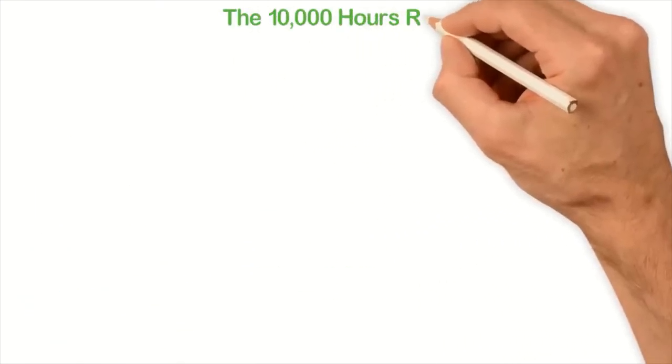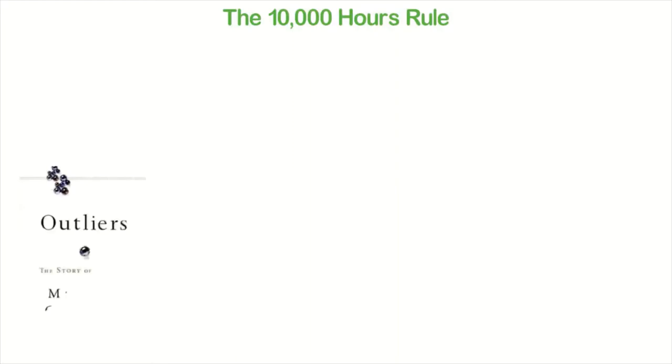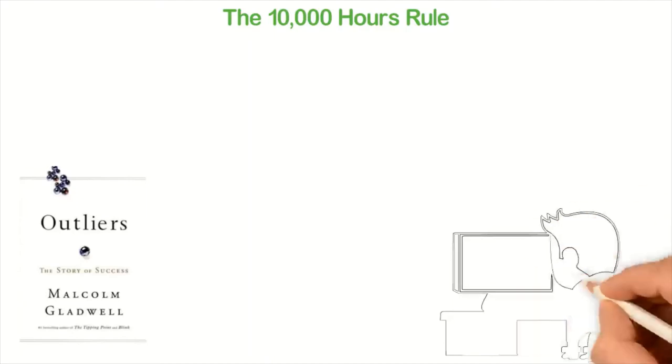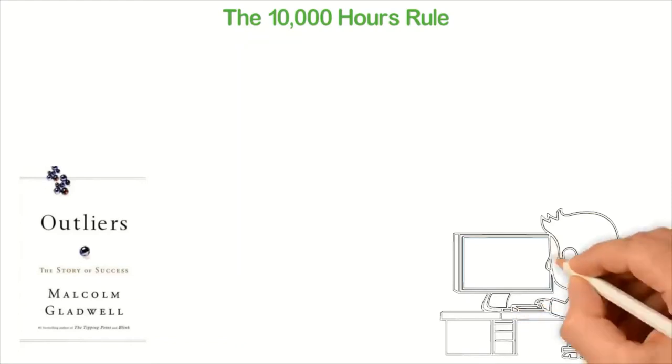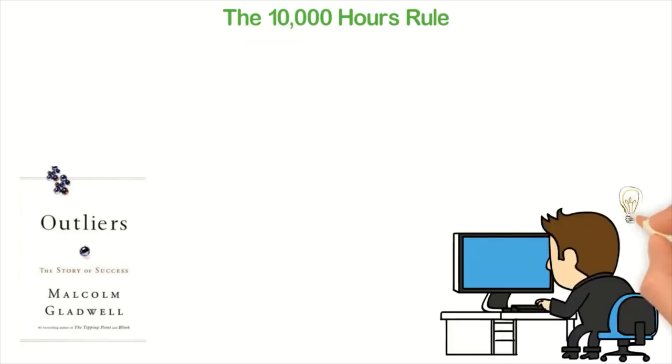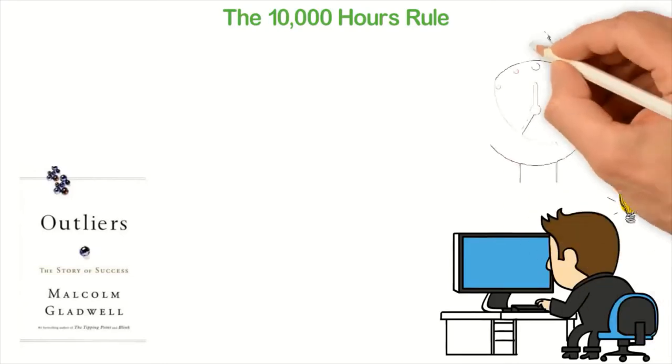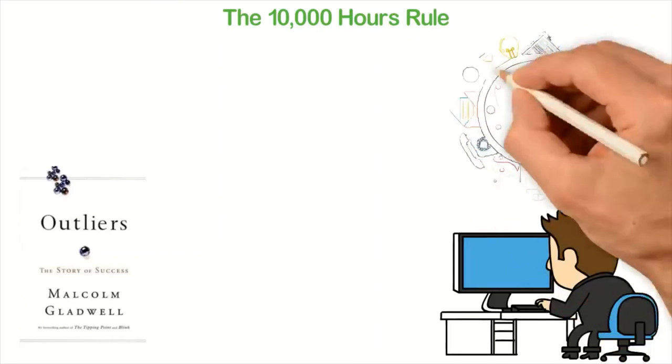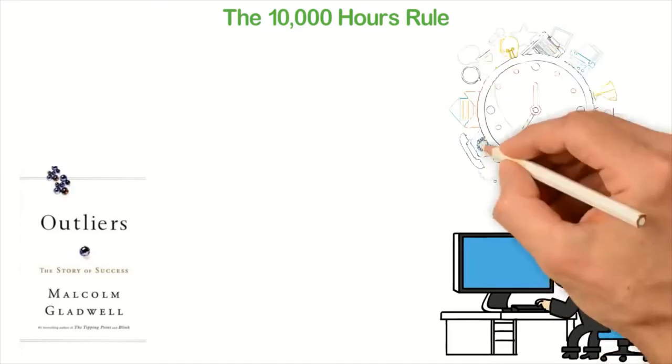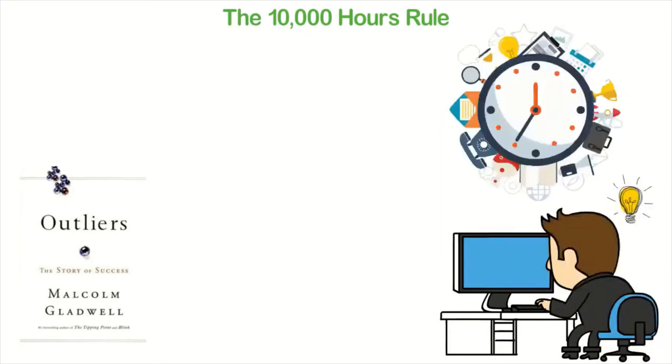The 10,000 hours rule. Malcolm Gladwell wrote a book titled Outliers and in this book, Gladwell shares his studies about successful people and how long it took them to achieve great success. He then came to the conclusion that it takes the average of 10,000 concentrated effort to become great at anything. A few people have disagreed with Gladwell's theory of 10,000 hours and that's fine. It may not be 10,000 hours. It may be 7,000 hours or even 5,000 hours.